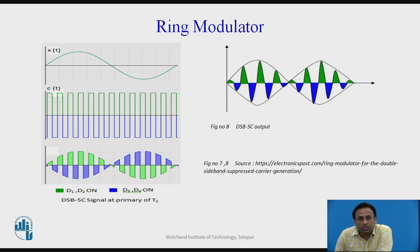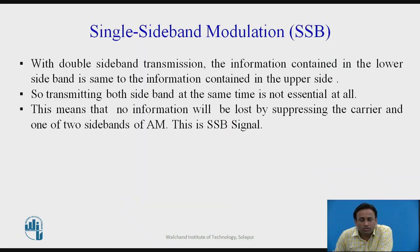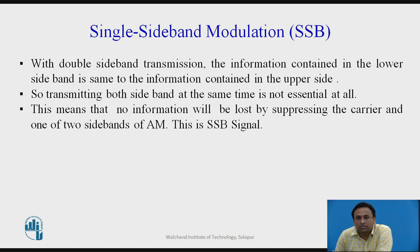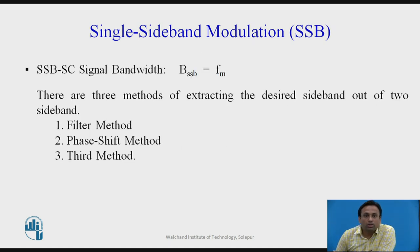Now let us see what is meant by SSB modulation. In double sideband transmission, the carrier is suppressed and only two sidebands are sent. Since the information in the lower sideband is the same as in the upper sideband, transmitting both sidebands simultaneously is not essential — no information is lost by suppressing one of them. This is the principle of SSB: suppressing one sideband along with the carrier.